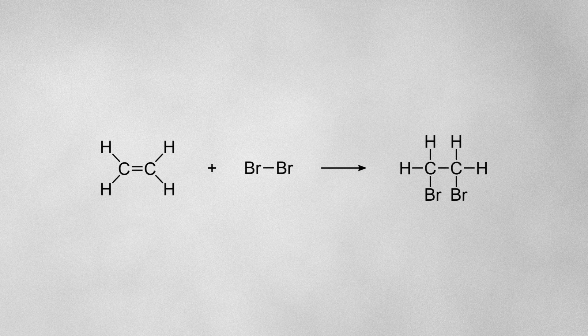Let's take a look at the mechanism for the reaction between ethene and bromine. You might notice that the bromine molecule doesn't have a permanent dipole on it. The two bromine atoms have the same electronegativities, so the bonding pair of electrons that they share is going to sit right in between the two of them. This means that neither atom will have a partial positive or negative charge on it.